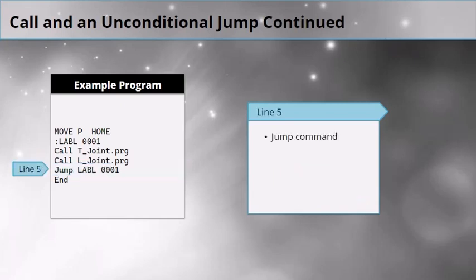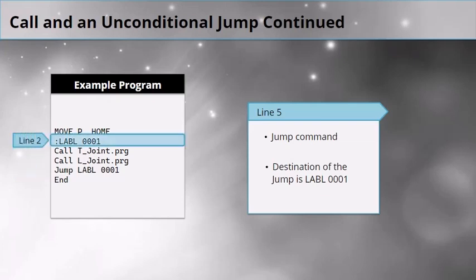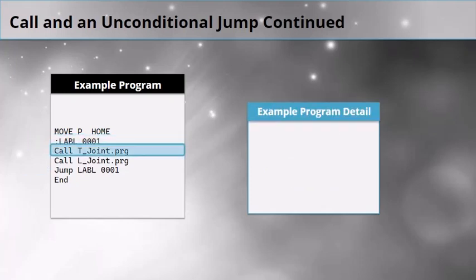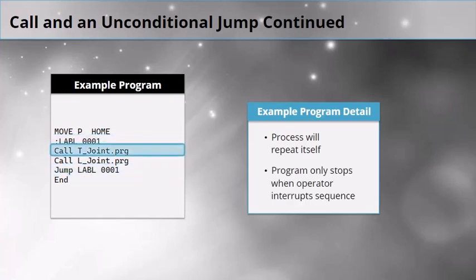Line 5 is a jump command. The destination is label 0001. When this line executes, the cursor moves back up to line 2 of the program. As this example is written, this process will repeat itself over and over again. This program will only stop when an operator interrupts the sequence.